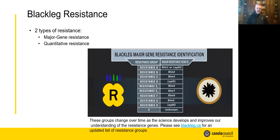When it comes to blackleg resistance, there are two classes or two different types of resistance: major gene resistance and quantitative resistance. We're going to focus on major gene resistance here, because this is the type of resistance that recognizes the races of the blackleg fungus Leptosphaeria maculans. So far, we've identified about 10 different major resistance genes that might be in use in Canadian canola cultivars.